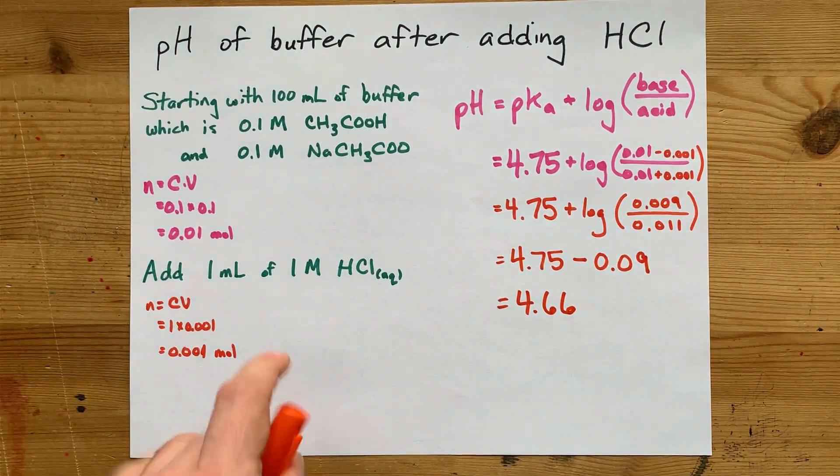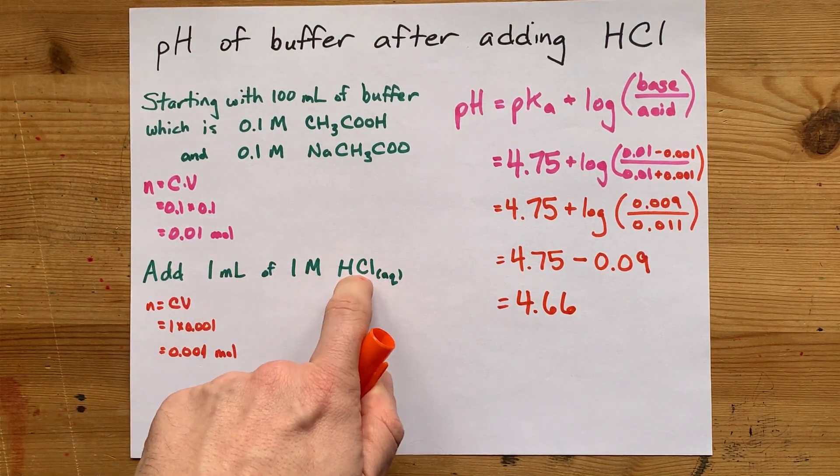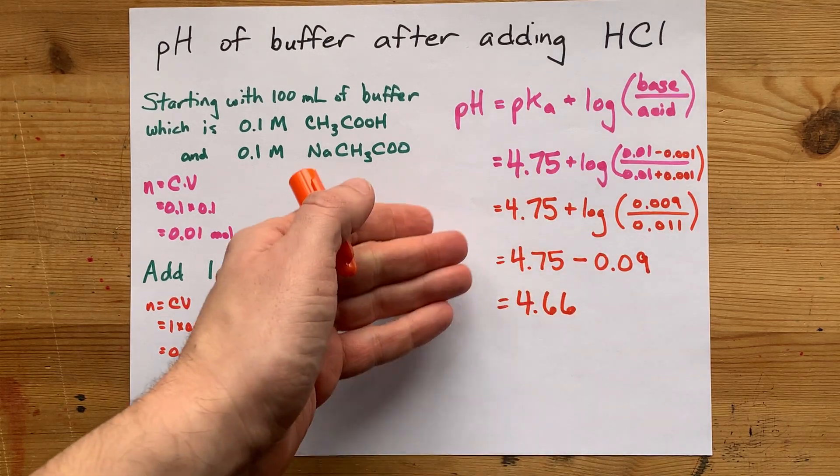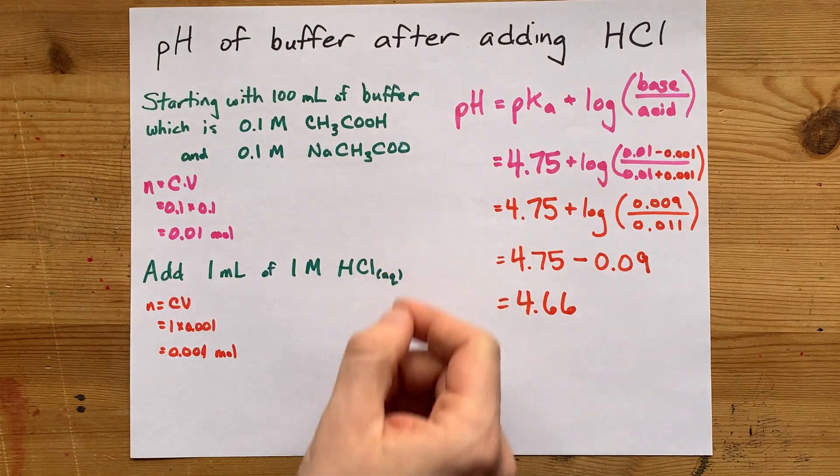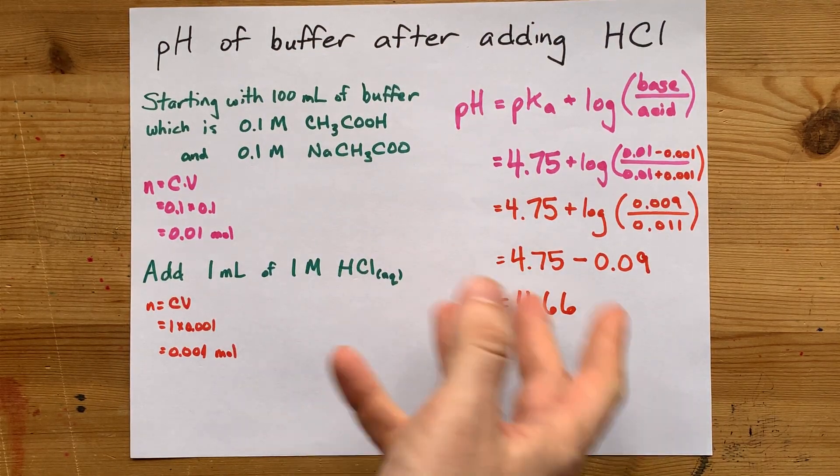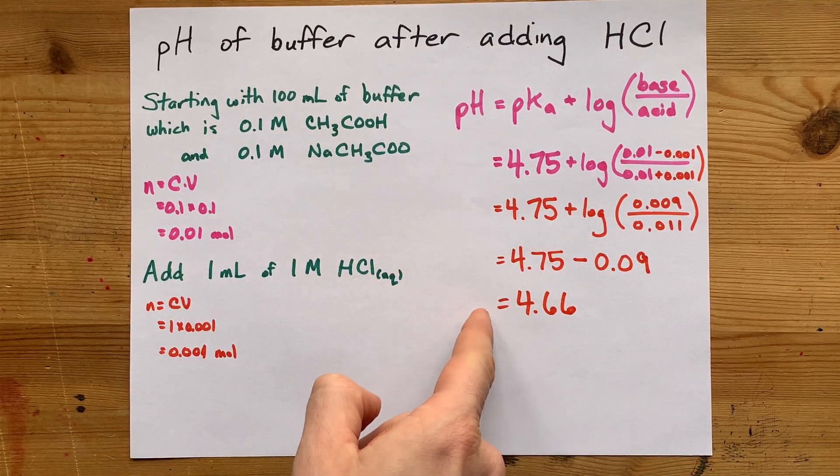So despite the fact that I added an admittedly small amount of a strong acid, my pH didn't even change by 0.1. The effect of adding a strong acid to a buffer is usually that the pH goes down because you are adding acid, but not by much.